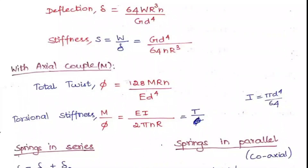The deflection is denoted as δ, which equals 64WR³N / GD⁴ — similar to the twist formula but multiplied by R, making it R³. The stiffness is load divided by deflection, so substituting the deflection formula and cancelling W gives stiffness = GD⁴ / 64NR³. This covers the axial load case for springs.